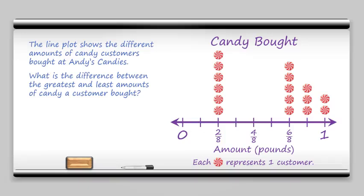So the greatest value here is one pound where we have two customers. And the least amount that any customer bought was two-eighths pound and that was bought by several customers. But we're just looking for the difference in the amounts. So that's one minus two-eighths.